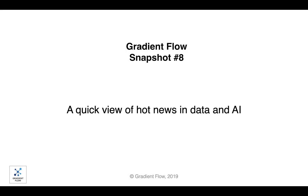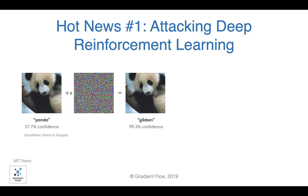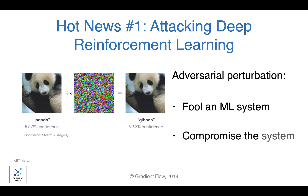Welcome to Gradient Flow Snapshot No. 8. An adversarial perturbation is an intentional change to a physical object in order to fool a machine learning system into mistaking that object for something else.